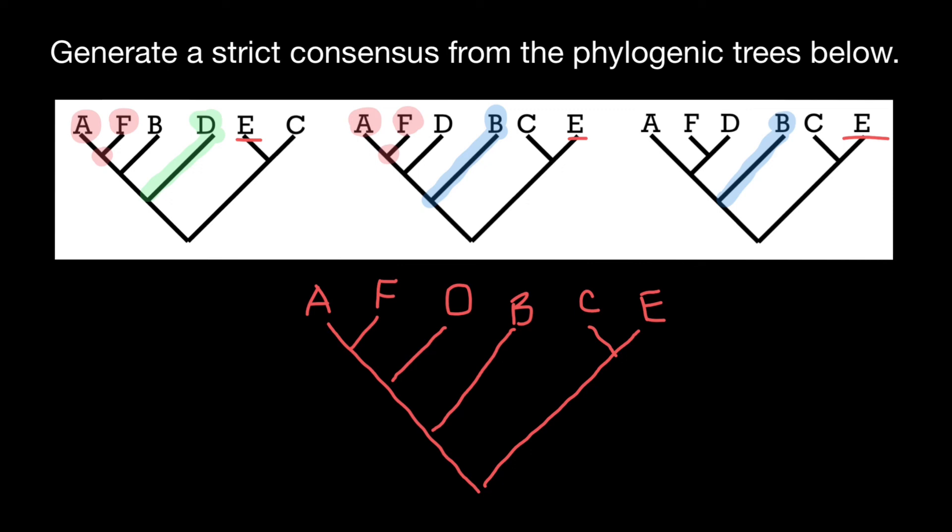And we call such a phylogenic tree a consensus phylogenic tree made of three different alternative variants. And this is all for today. Subscribe and see you in the next video. Goodbye.